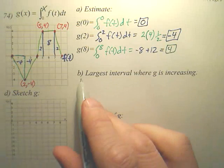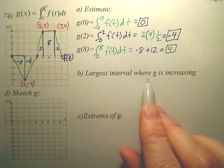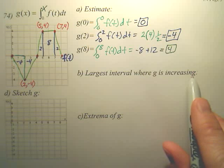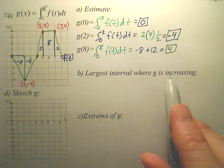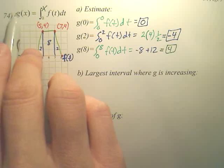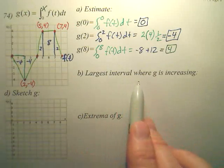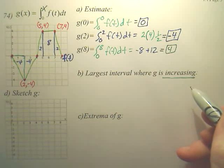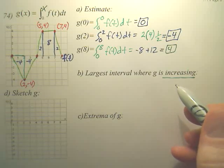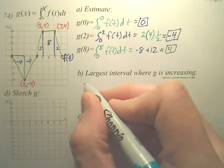Last one - what we're going to do right now is part b: the largest interval for which g is increasing. Now I want you to think about something here. When you're thinking the word increasing, isn't that when the derivative is positive? So let's simply derive g.